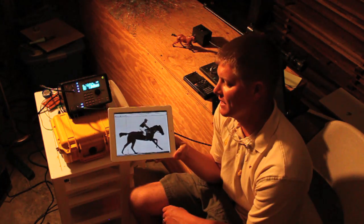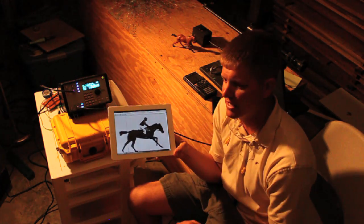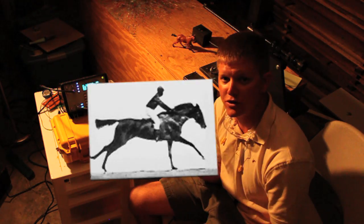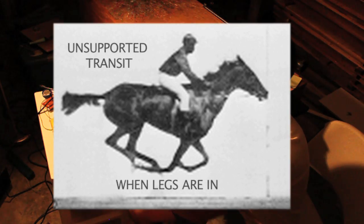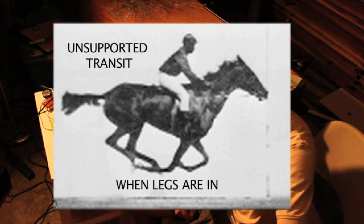Muybridge was pretty sharp. What he did was string out some strings and had a man ride the horse through them. Each string was associated with a camera - basically a time of arrival switch. Pretty interesting.